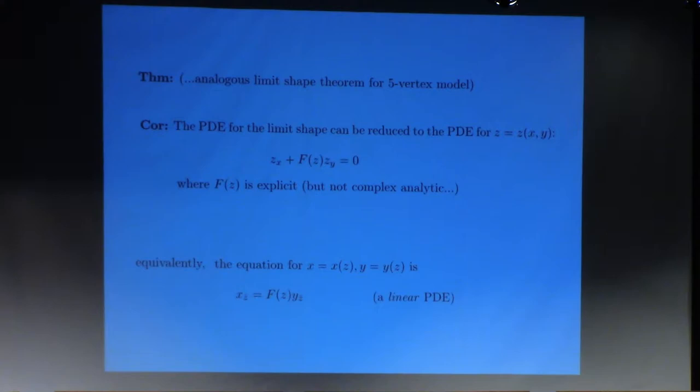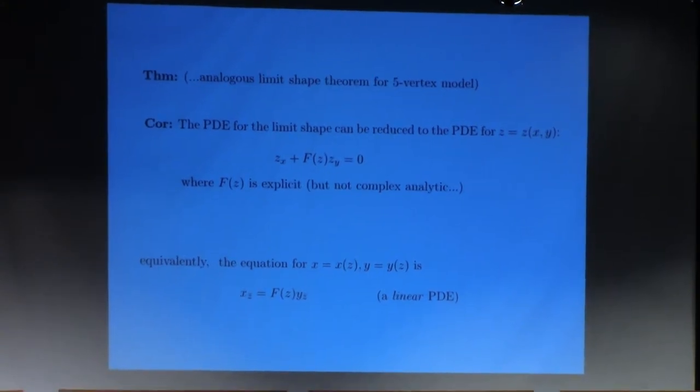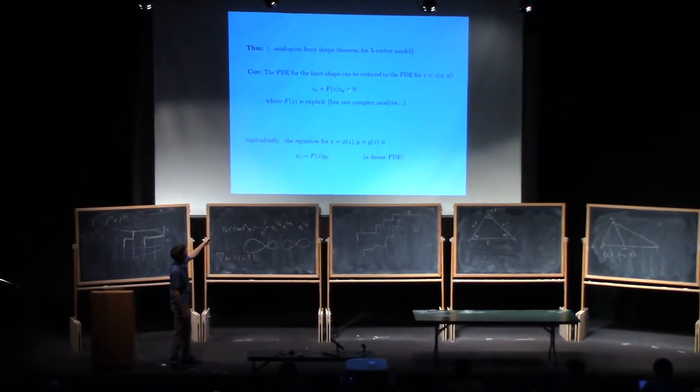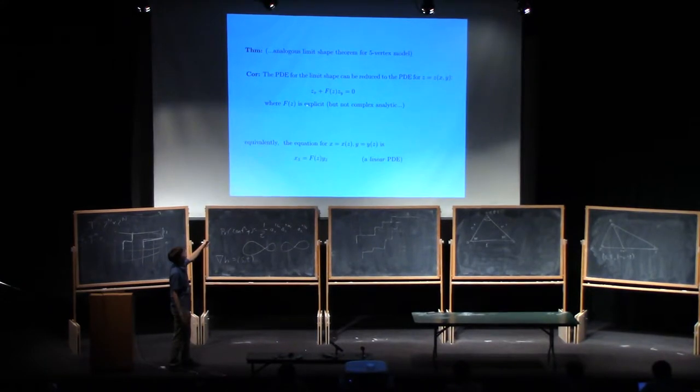ZX plus some function times ZY equals zero, where now this function is not just Z itself, but there's some explicit function, which I could write down. And if you ask me afterwards, I will tell you what it is. It's an explicit, but the mysterious thing, I guess, or interesting thing is that it's not actually a complex analytic function now. And so we cannot, as far as I know, solve this using the same methods we did before in the R equals one case.